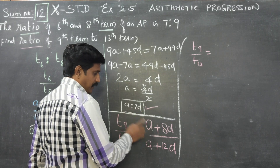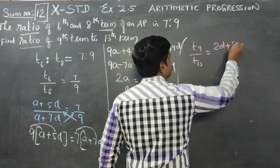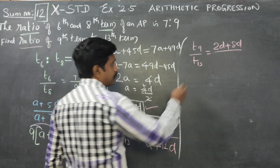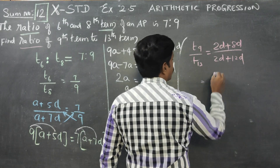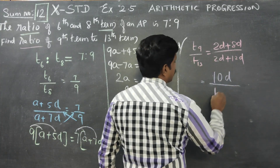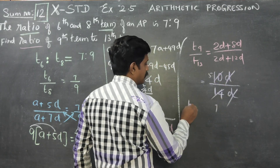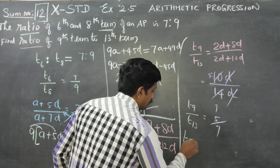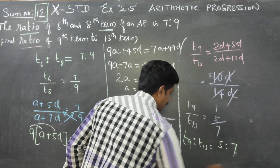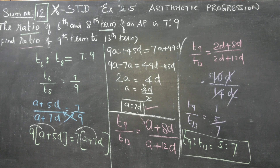Substituting A equals 2D: T9 by T13 equals 2D plus 8D by 2D plus 12D, which is 10D by 14D. The 2D and common factors cancel, giving T9 to T13 equals 5 is to 7. The final ratio of the 9th term to the 13th term is 5 is to 7. Thank you.